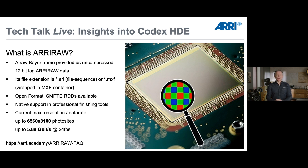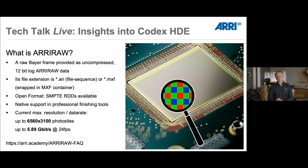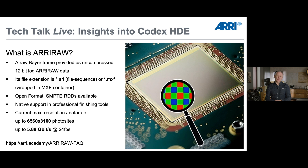In the past, ARRI RAW was considered a heavy format. Since it's stored in an uncompressed manner, compared to compressed codecs, it's more data. For example, if you shoot with the ALEXA 65 — our rental super large format camera — you get 6560 by 3100 photosites per frame in one flavor, resulting in almost six gigabits per second of data rate at 24 frames per second. So that could be considered heavy from a certain point of view.